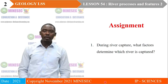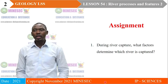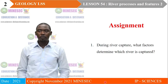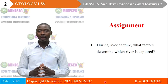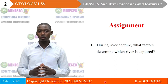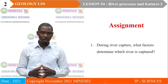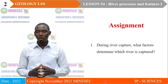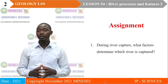At the end of our previous lesson, we were expected to give the factors that determine which river is captured during river capture. The factors that determine which river is captured. Recall during our last lesson, we said river capture is a situation where one river diverts the headwaters of another. The question is asking what conditions favour one river in order to divert the waters of the other.